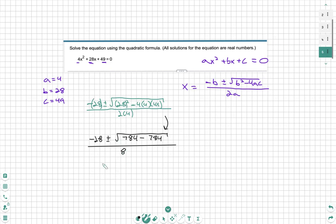Perfect. Now we're going to keep simplifying. Negative 28 plus minus 784 minus 784 is 0, which is going to be convenient because the square root of 0 is just 0.